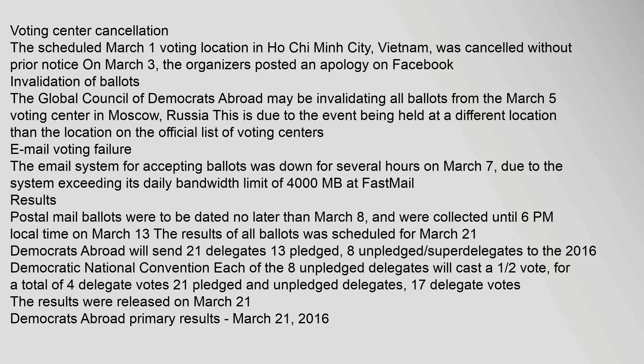Results: Postal mail ballots were to be dated no later than March 8 and were collected until 6 p.m. local time on March 13. The results of all ballots were scheduled for March 21. Democrats Abroad will send 21 delegates — 13 pledged and 8 unpledged superdelegates — to the 2016 Democratic National Convention. Each of the eight unpledged delegates will cast a one-half vote, for a total of four delegate votes, making 17 total delegate votes across 21 pledged and unpledged delegates.